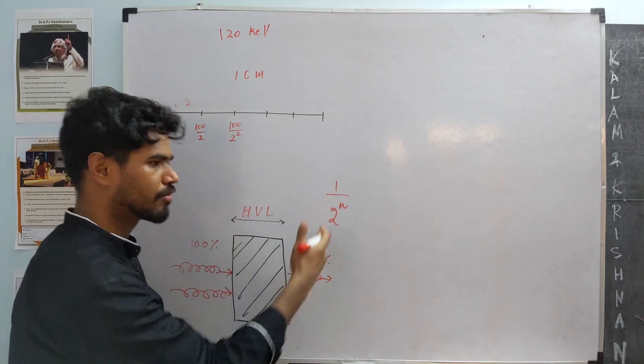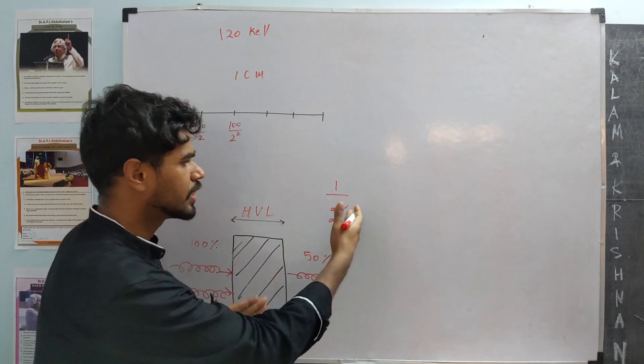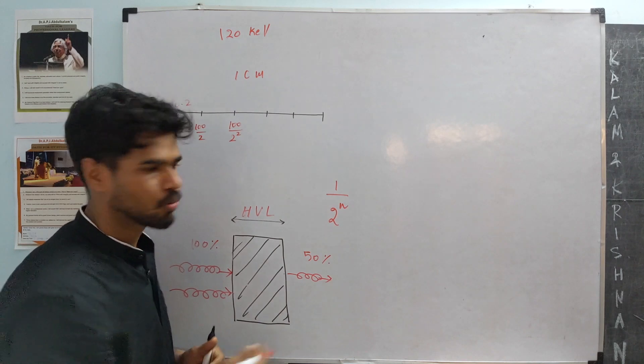Each half-layer, there is a drop of half. By the time it comes out of a thickness of n half-layers, it will be 1 by 2 power n.